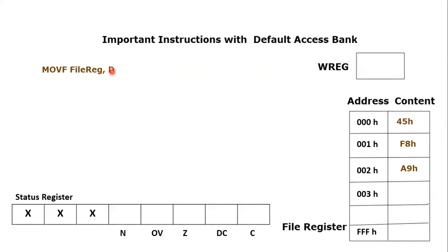If the destination bit refers to a file register, we have to move the data towards that same file register. But why would one want to move data from a file register to the same file register? This is why this instruction becomes interesting. We will explore that feature later. First, let's observe how to move a file register's content into the working register.